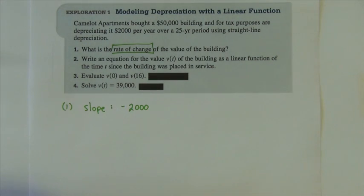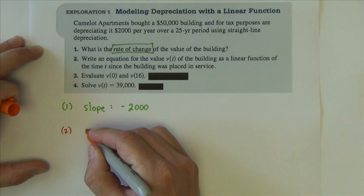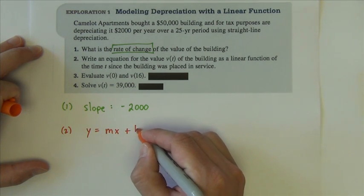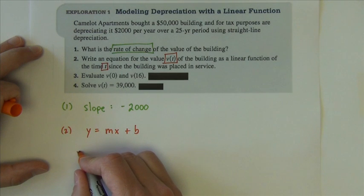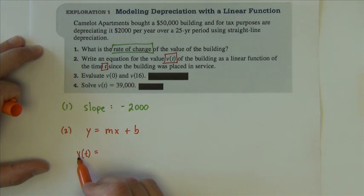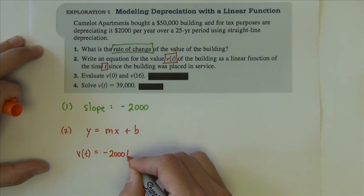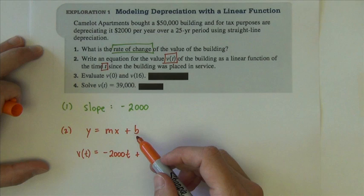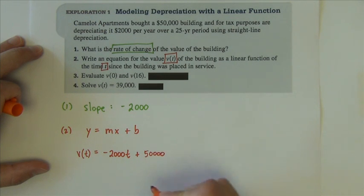Next, write an equation for the value v of t of the building as a linear function of the time t since the building was placed in service. Using the form y equals mx plus b with the problem's variables: v of t equals negative 2,000 times t plus 50,000. The slope is negative $2,000, t replaces x, and the y-intercept — the starting value of the building — is $50,000.